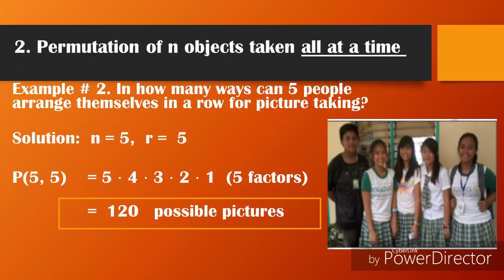Number two: Permutation of n objects taken all at a time. Example number 2: In how many ways can 5 people arrange themselves in a row for picture taking? Here n = 5 and r = 5, since we are taking all at a time. So P(5, 5) = 5! = 5 × 4 × 3 × 2 × 1 = 120 possible pictures.